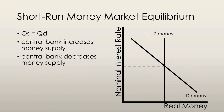Let's look at the short-run effects of a change in the quantity of money. Starting from equilibrium, if the central bank increases the money supply by conducting an open market purchase, people end up with a surplus of money holdings, so they enter the loanable funds market and buy bonds. This increases the demand for bonds, which increases the price of bonds, and thus the interest rate falls. Keep in mind, when the price of a bond increases, its interest rate will fall.